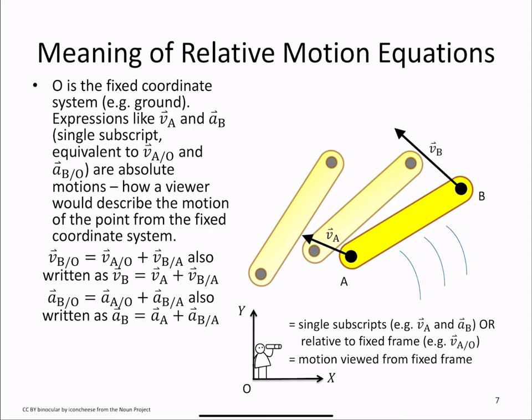Our fixed coordinate system, at O, is like the ground. We're watching an object move from what we consider to be a static position. Parts of our equations describe the absolute motion of points on a rigid body.